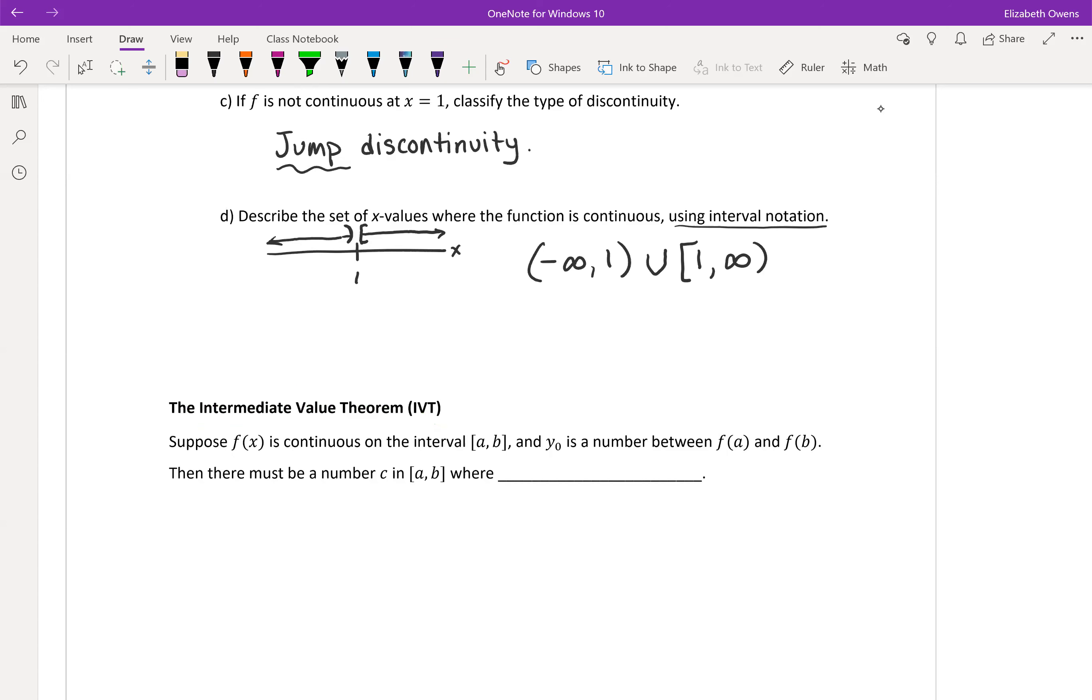The Intermediate Value Theorem first requires us to suppose a couple things. We are going to suppose our function f(x) is continuous on a certain interval that we're looking at, the interval from a to b.